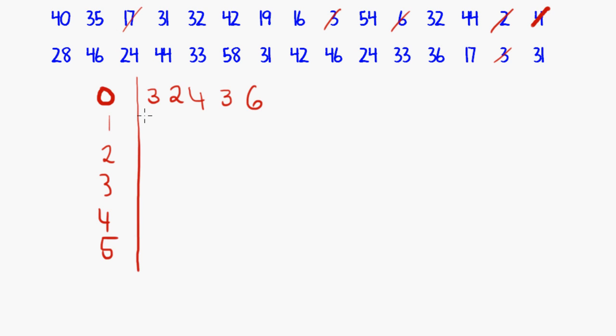So now I'm onto the ones. I've got a one, seven there, and a one, nine there, another one, seven, and that's it. So I'm onto the twos. I've got a two, eight there, and a two, four, and another two, four, and that's it.